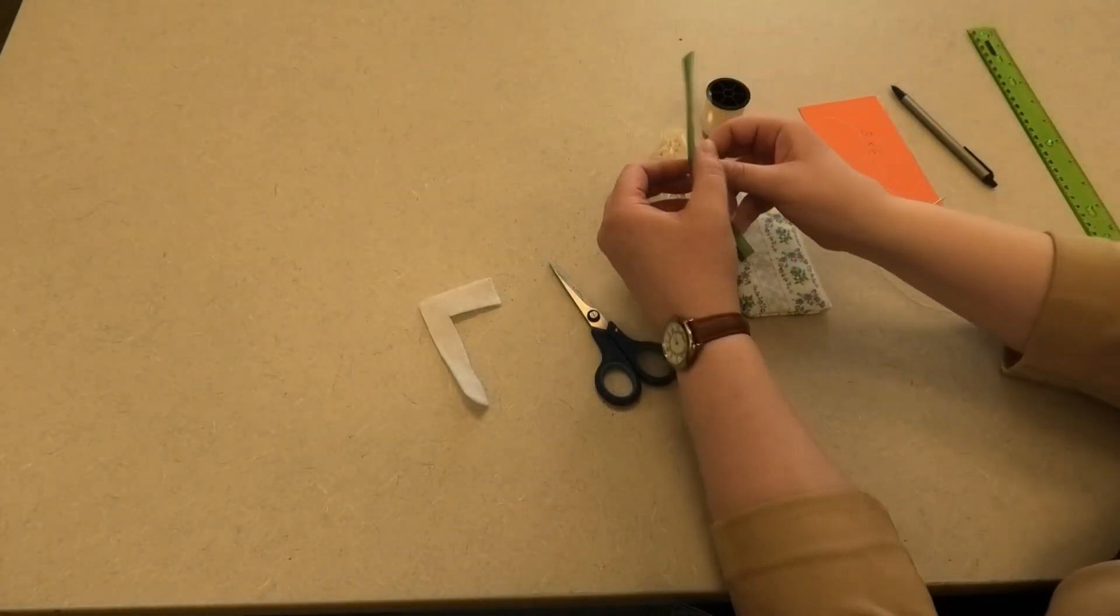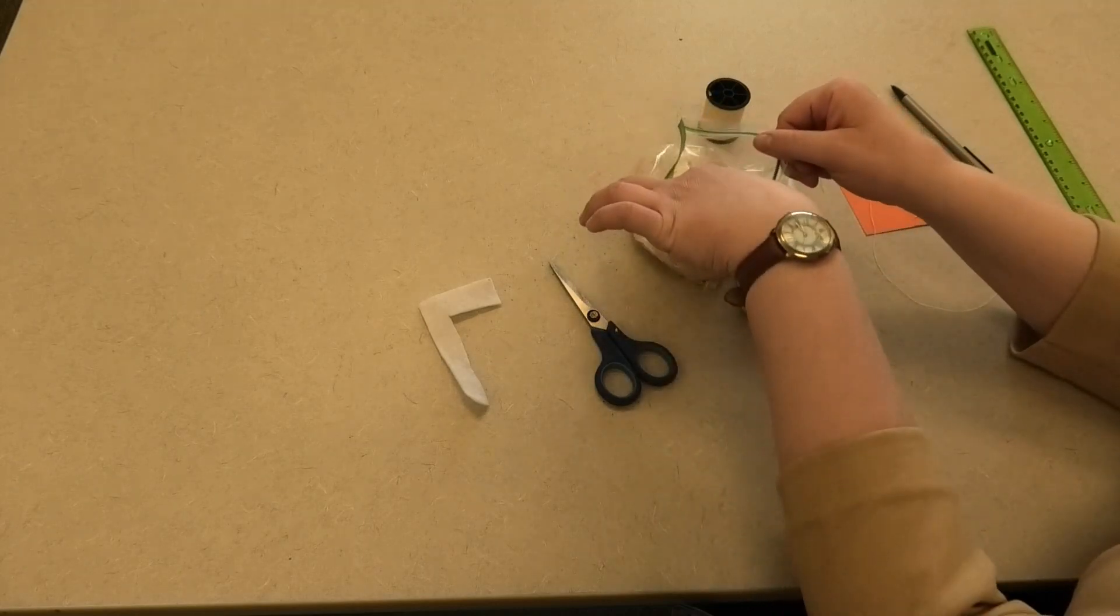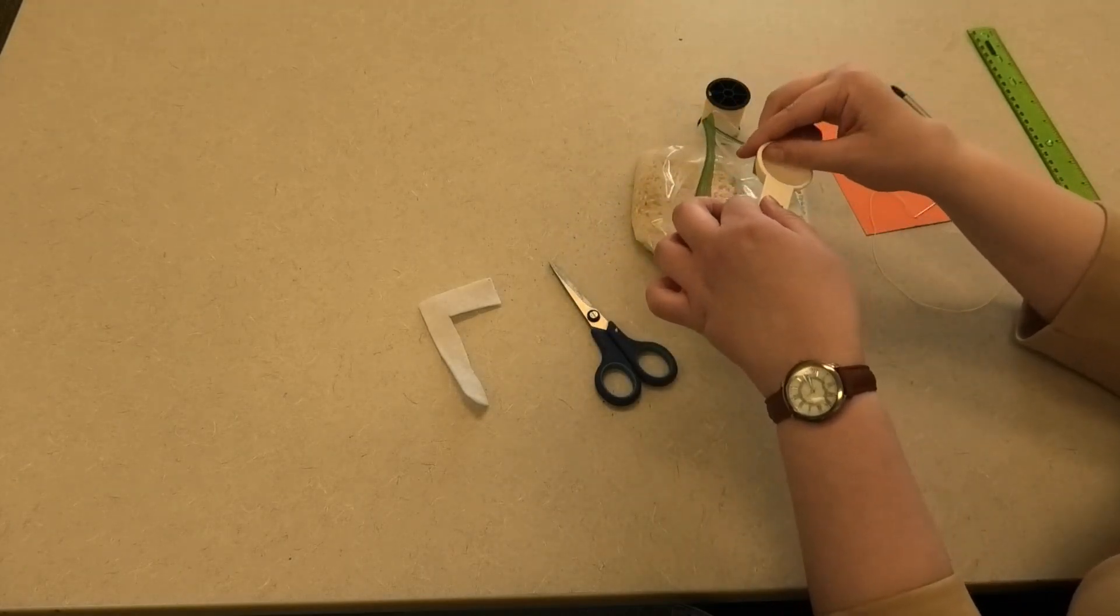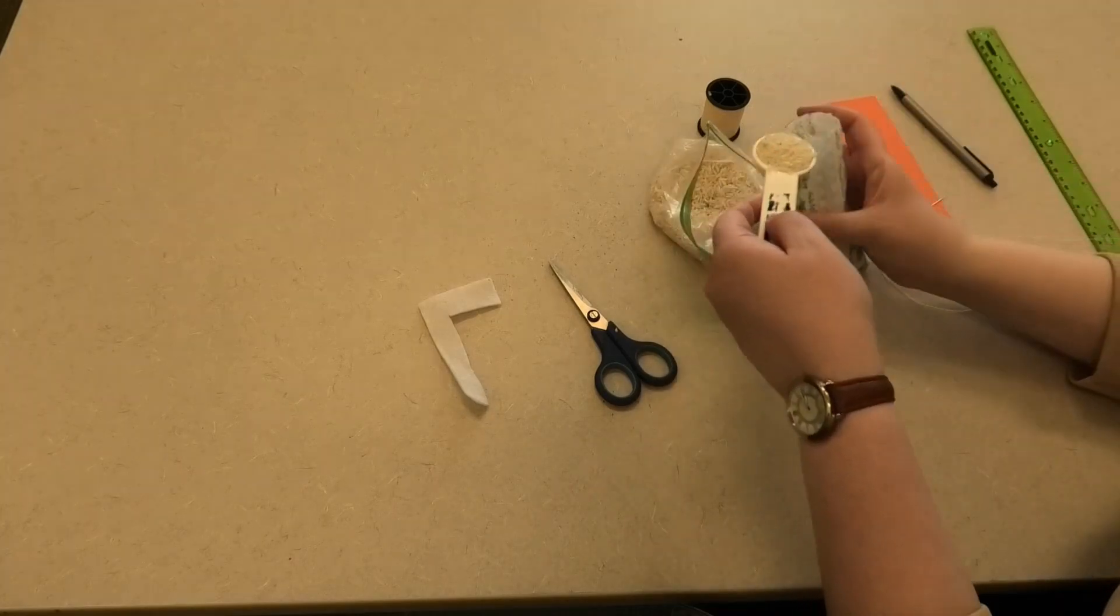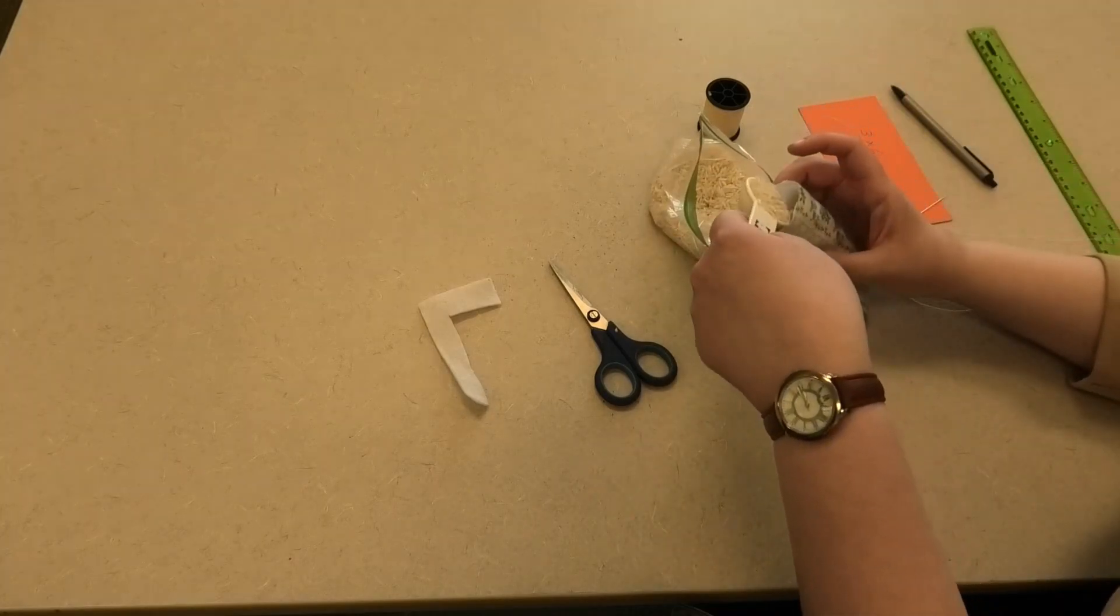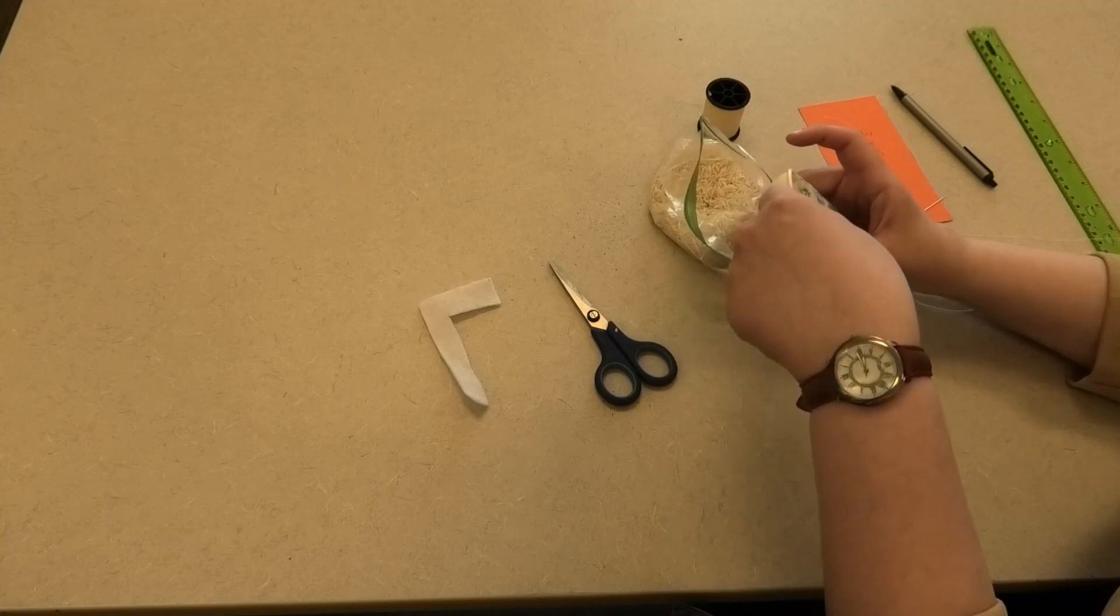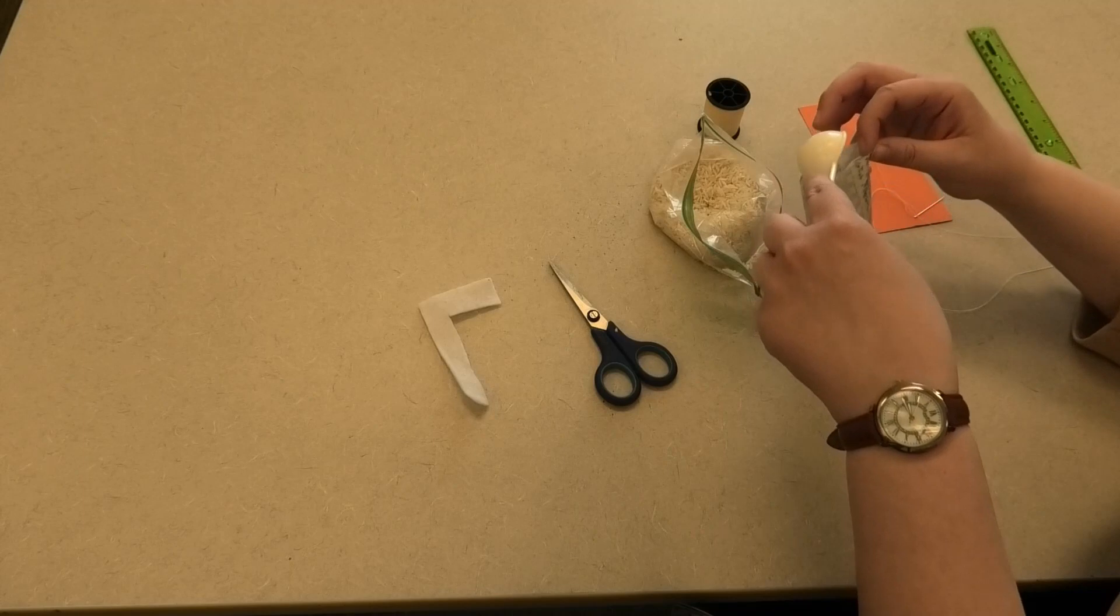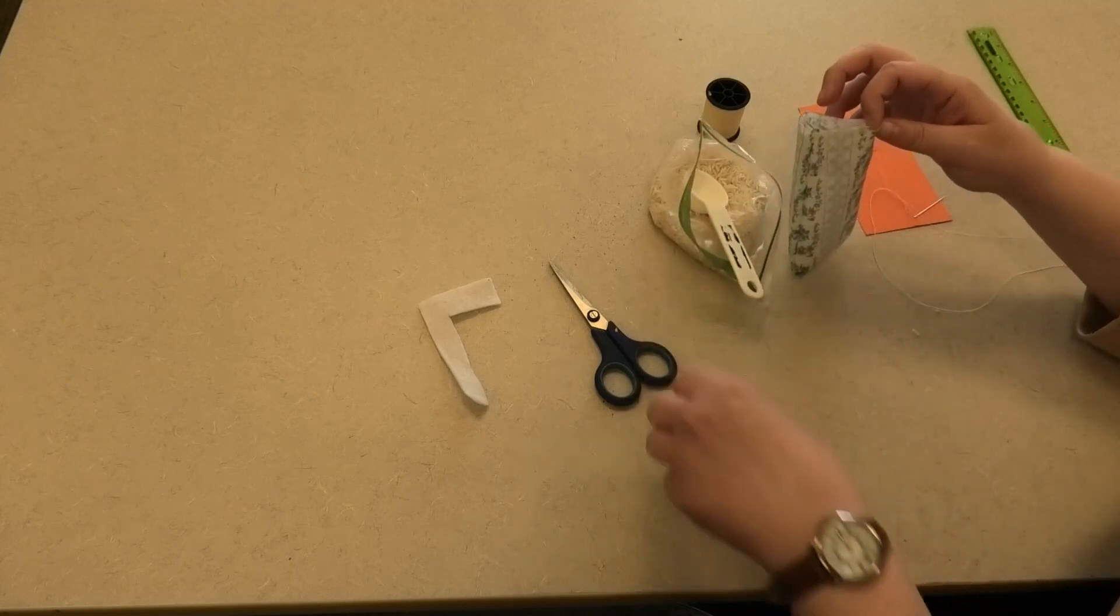And I have here my bag of uncooked rice and a tablespoon measure, just to help get things in there. I'm just going to scoop up a tablespoon and just carefully slide it in. If a few little kernels fall out, no big deal. I'll just pick them up later.